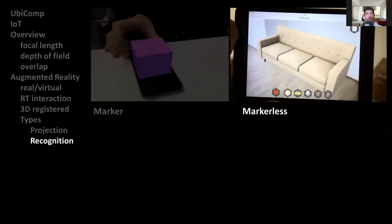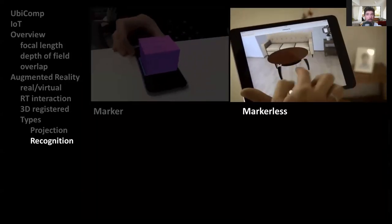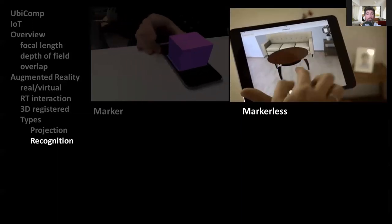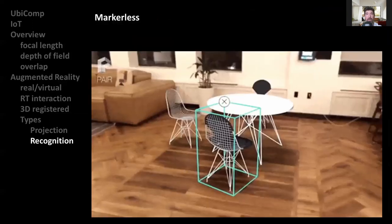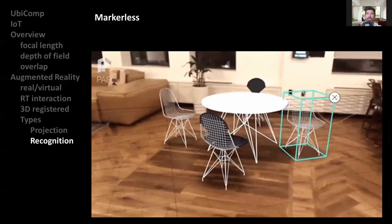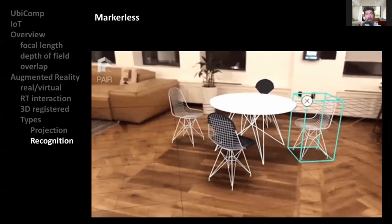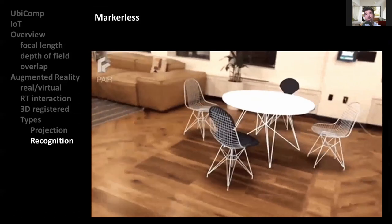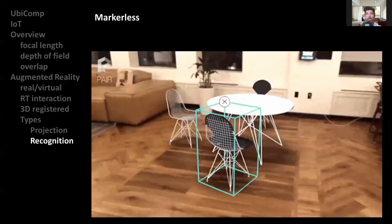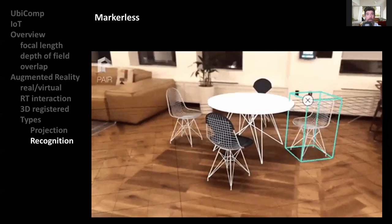A whole different approach is the markerless augmented reality type that doesn't require image recognition to produce visual effects. Instead, the technology uses a device's camera, location software, and accelerometer to detect positional information, including the orientation of different objects and the space between them.